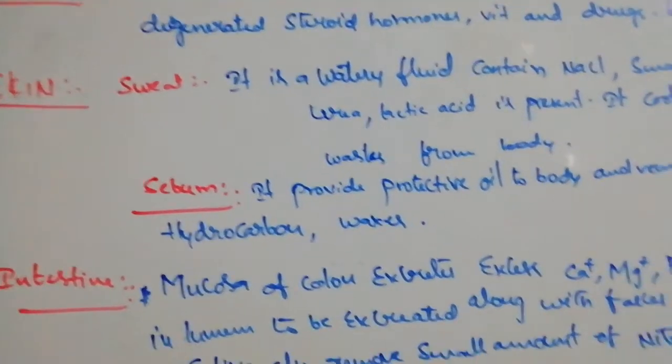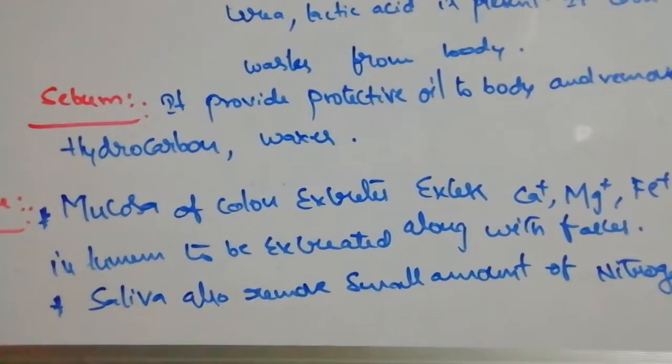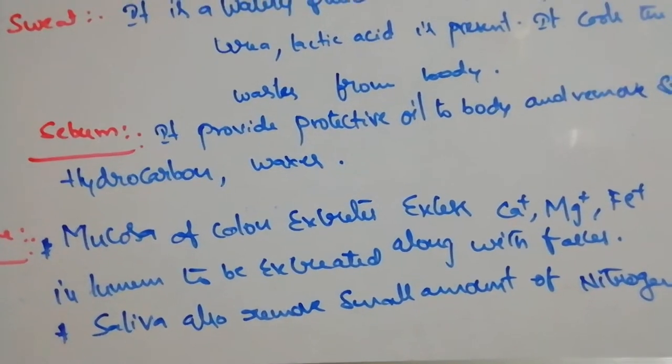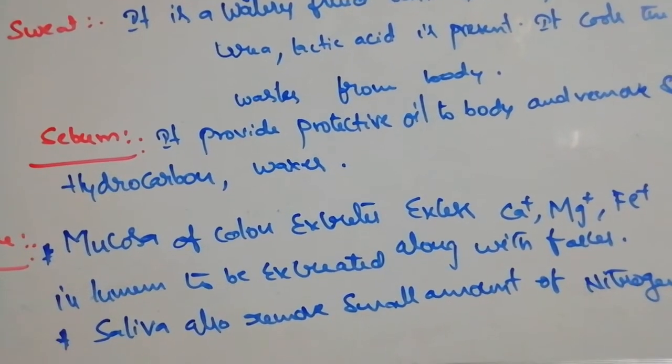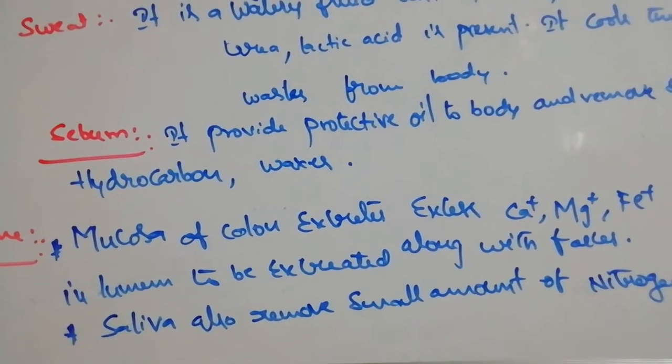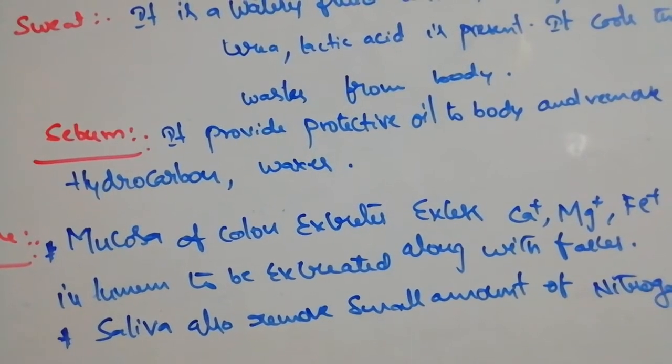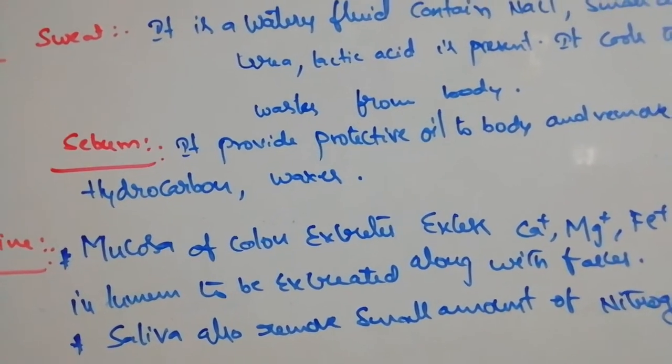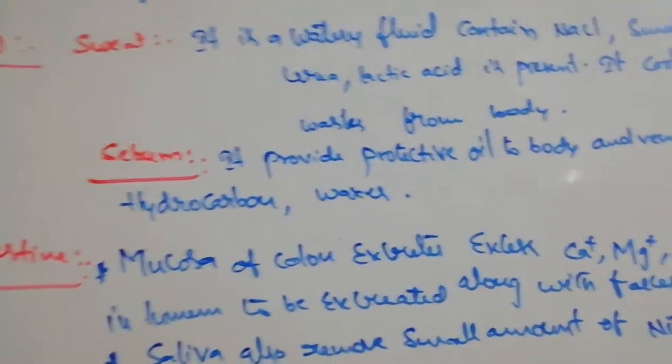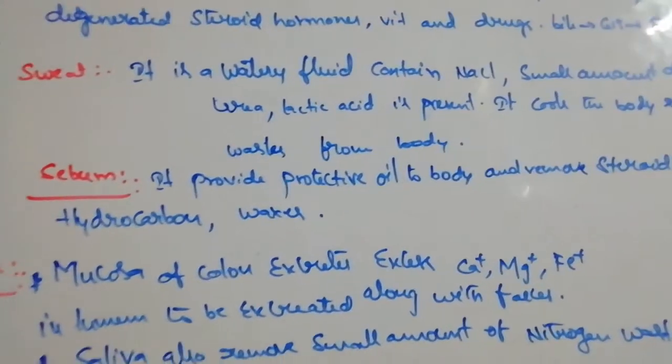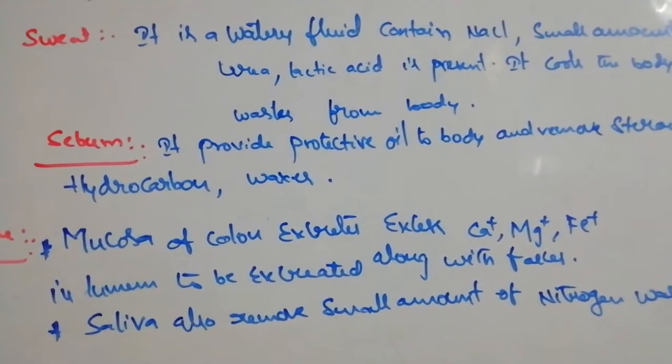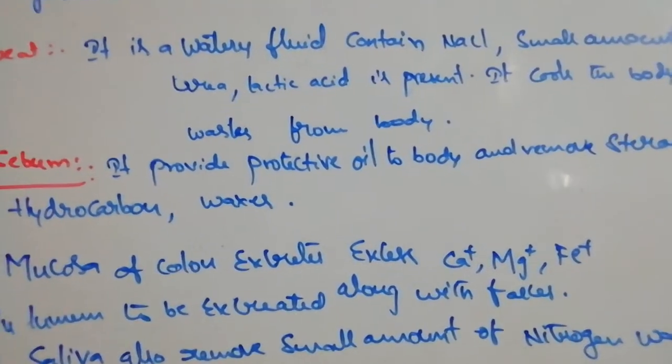Last one is the intestine. Intestine mucosa of the colon it excretes the excess calcium magnesium iron into the lumen which is excreted out through the fecal matter. And saliva is also removing the small amount of nitrogenous waste.